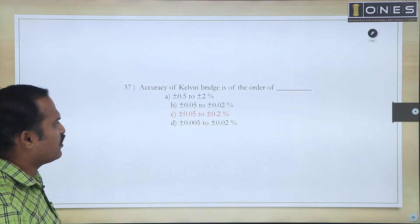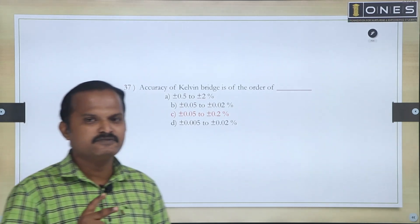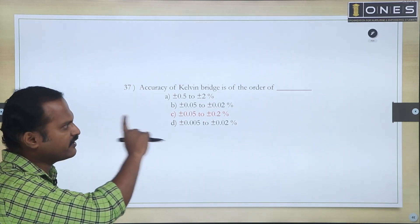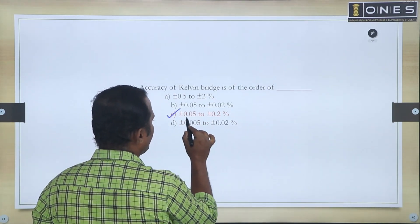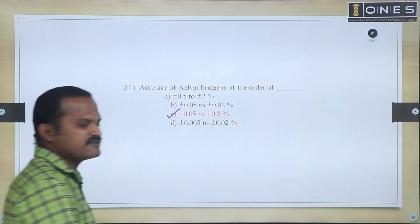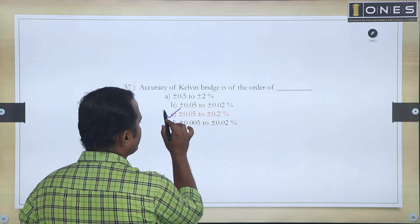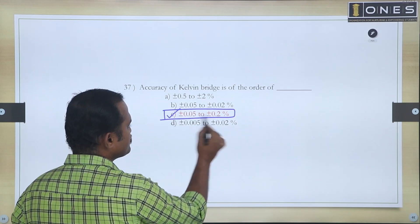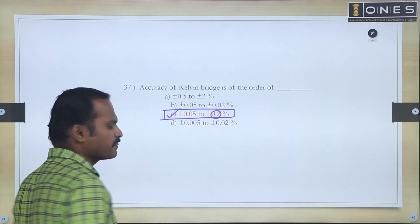The accuracy of Kelvin's bridge - we have already discussed Kelvin's double bridge. The accuracy is from 0.05 to 0.2 percentage. This is correct. The confusion might be between B choice and C choice, but the answer is 0.05 to 0.2 percentage.